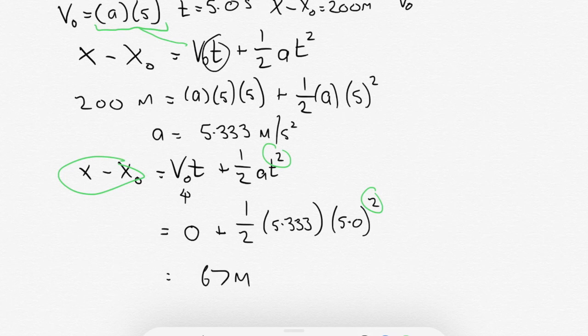So in the first five seconds, the ball, when traveling with this constant acceleration, traveled 67 meters. In the second five seconds, as it tells us in the question, the ball travels 200 meters. And if you were to keep checking in on the ball as it moved along, every five seconds, you'd find that it traveled further and further due to that constant acceleration.